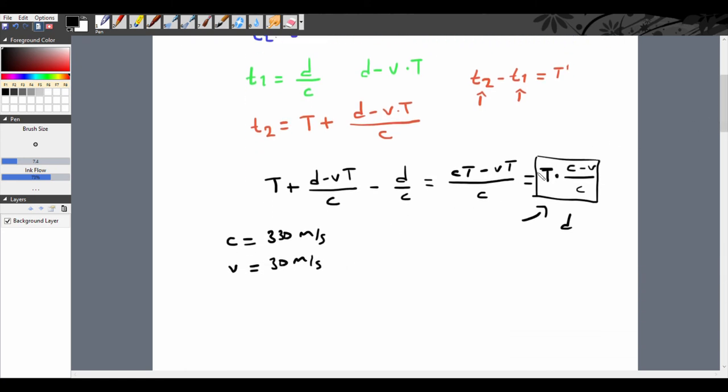Let us give 3 seconds for T. The answer is 3 times 330 minus 30 over 330, which gives us 300 times 3 over 330. That is almost 2.72 seconds. So it is shorter than the actual duration.